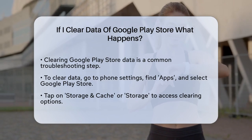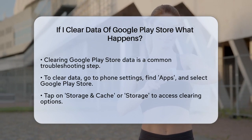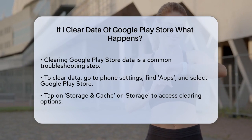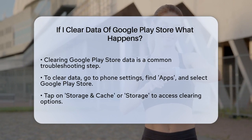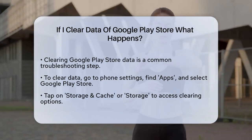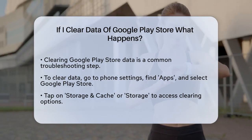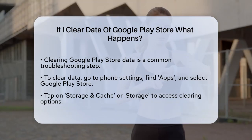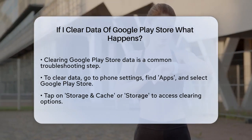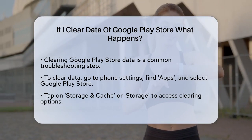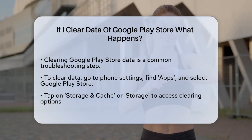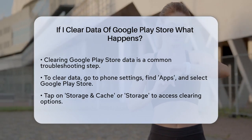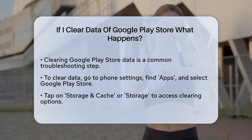First, let's go through the process. To clear the Google Play Store data, you need to open your phone's settings, navigate to the Apps section, and find the Google Play Store. Once you're there, tap on Storage and Cache, or just Storage, depending on your device. Here, you'll see the options to Clear Cache and Clear Data.